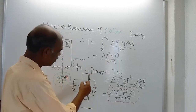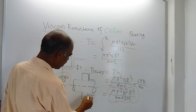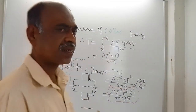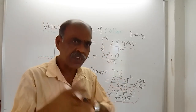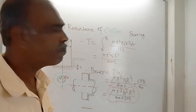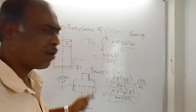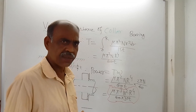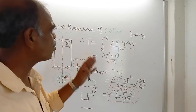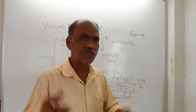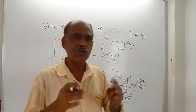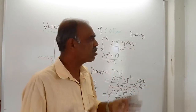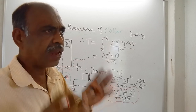In between the collar and the bearing, there is oil of thickness t — same as in the previous cases. You have seen viscous resistance of a journal bearing, viscous resistance of footstep bearing, and here the same approach applies. The film thickness is t. You take one elementary ring, and the calculation starts from there — calculating shear stress using Newton's law of viscosity: τ = μ × (du/dy), where the velocity gradient equals ω divided by t.